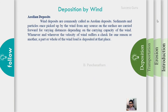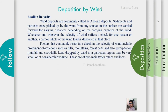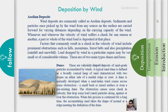Next is the deposition of wind — aeolian deposits. Wind deposits occur when obstacles like hills, mountains, or forests block wind movement. There are two main types of deposits: dunes and loess. Dunes are formed from sand-size particles.